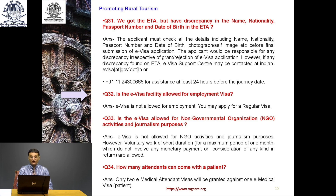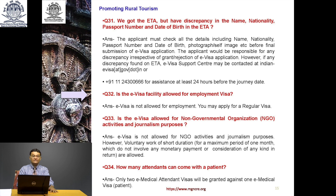Is E-Visa allowed for employment? No — E-Visa is not allowed for employment; apply for a regular visa. Is E-Visa allowed for NGO activities and journalism purposes? No — E-Visa is not allowed for NGO activities and journalism purposes. Do not misuse this — people coming from abroad posing as proxy NGOs or proxy journalists is not acceptable. However, voluntary work of short duration for a maximum period of one month, which does not involve any monetary payment, is allowed.